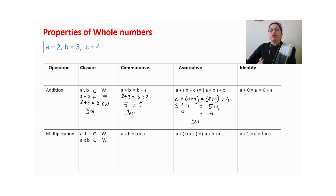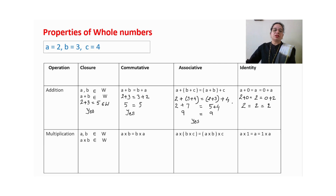Now the identity element: if commutative property holds and adding 0 to any number gives the number itself, then 0 is the identity element. Value of a is 2: 2+0=2, and 0+2=2. We get the same answer everywhere, so yes, we can observe the identity element in addition. Zero is the additive identity for whole numbers.